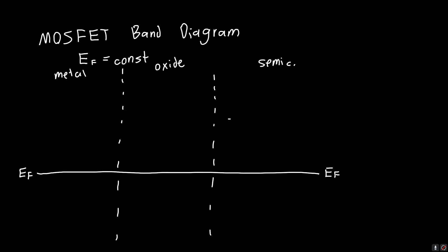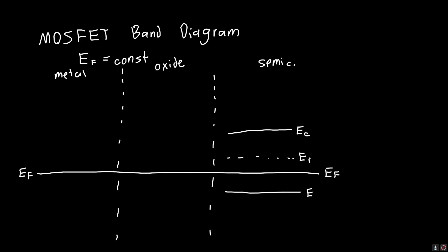In the semiconductor, if we just draw our band diagrams completely ignorant of everything — let's say this is a p-type material — we draw the conduction band, the intrinsic Fermi energy, the valence band, and lastly the vacuum level E0.